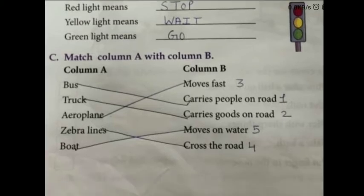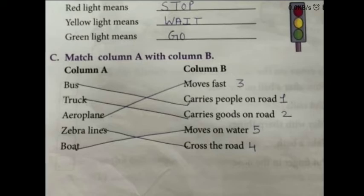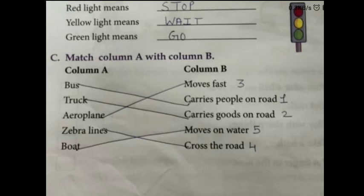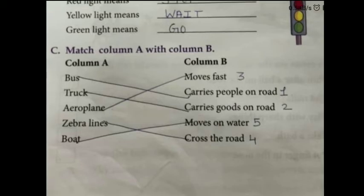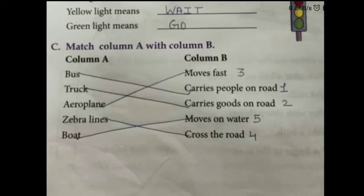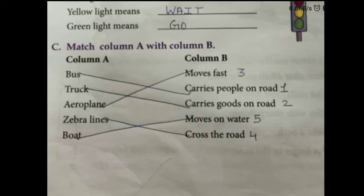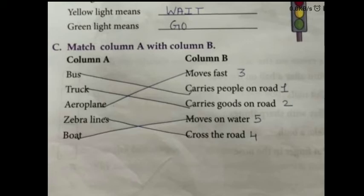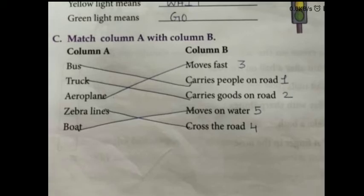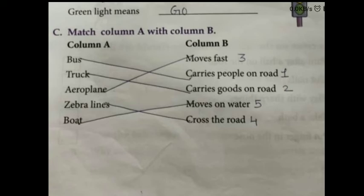Match column A with column B. Yarni ki column A ko aapko column B ke saath match karna hai. First is bus — bus carries people on road. Yarni ki logo ko carry karti hai road se, unko ek jaga se doosri jaga pohunchati hai. Second is truck — truck carries goods on road. Yarni ki saman ko ek jaga se doosri jaga le kar jata hai.